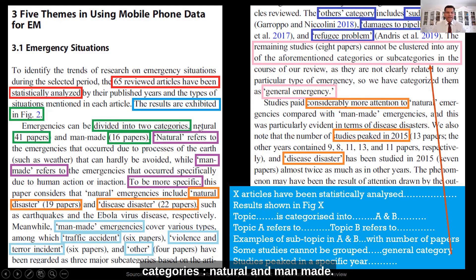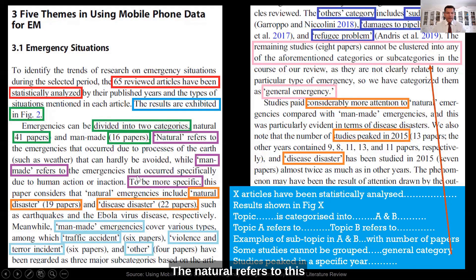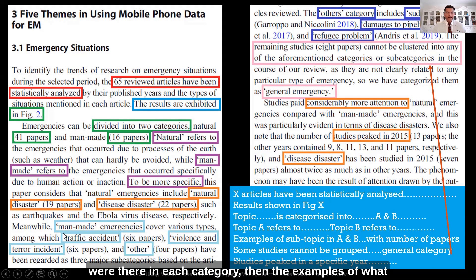Emergencies can be divided into two categories: natural and manmade. Natural refers to this, manmade refers to this, and so on. And then they go and talk about how many papers were there in each category, then the examples of what a manmade emergencies mean.